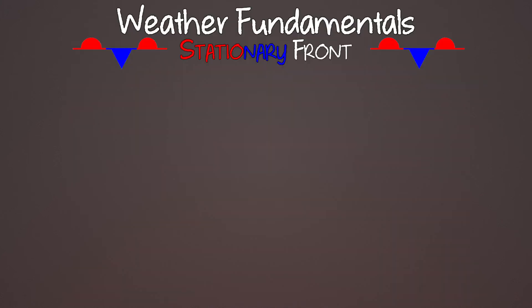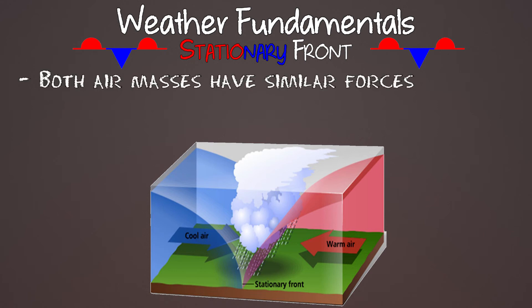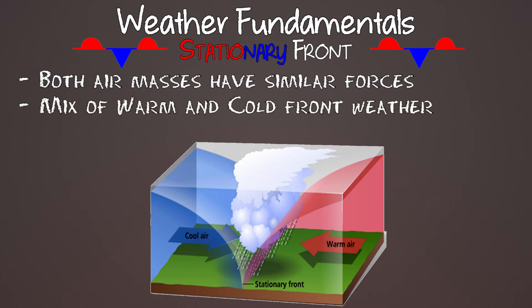A stationary front happens when you have a cold air mass and a warm air mass with relatively the same force — neither is shoving the other, so they stay in the same area. You usually get a mixture of both cold and warm front weather, and it lingers for a while.